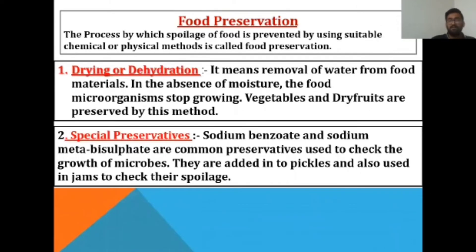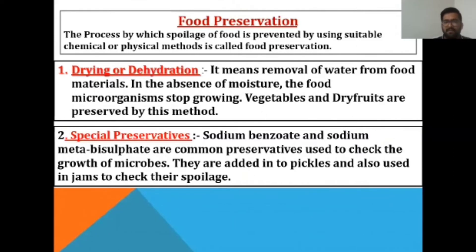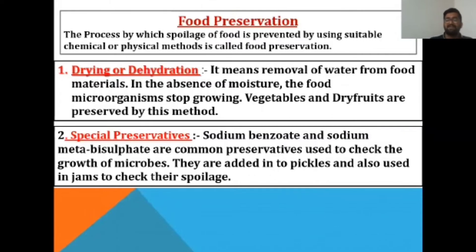To prevent food poisoning, we must preserve our food. The process by which spoilage of food is prevented using suitable chemical or physical methods is called food preservation. The first method is drying or dehydration — the removal of water from food materials. In the absence of moisture, microorganisms stop growing. Vegetables and dry fruits are preserved by this method.